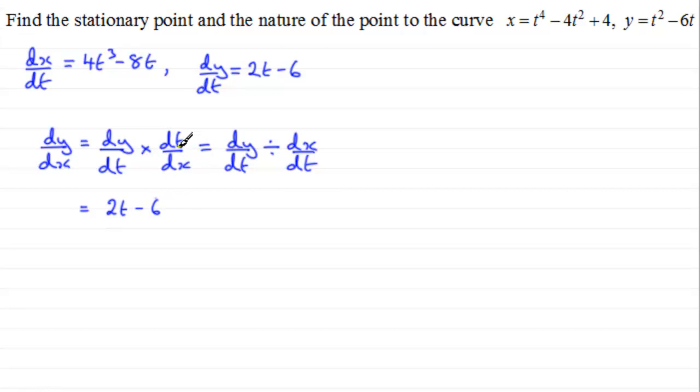And then if I was using this version we'd multiply it by dt by dx, which is 1 over this result. Or, just using this one, I divide straight away by dx by dt. So I divide this by 4t cubed minus 8t. Now I notice that 2 is a common factor in every term, both on the top and bottom. So I could divide through by 2 and that would give me t minus 3, all over 2t cubed minus 4t.